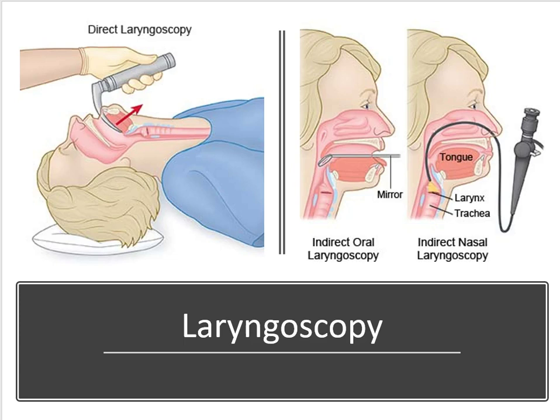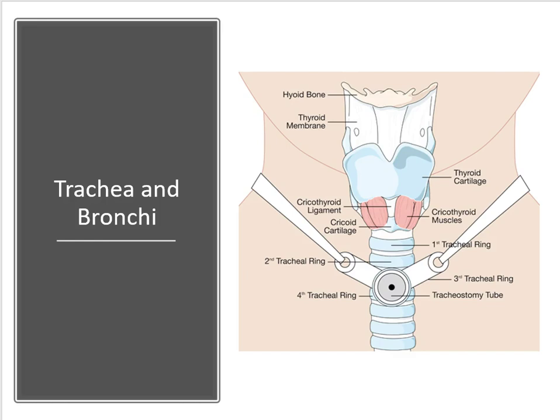On page 194, code 31579 says rigid or flexible — again, words matter. Next up on page 195, we look at procedures on the trachea and bronchi, specifically our tracheostomy procedures. These are divided based upon whether this is a planned procedure or an emergency one, and these codes are also divided based upon patient age.